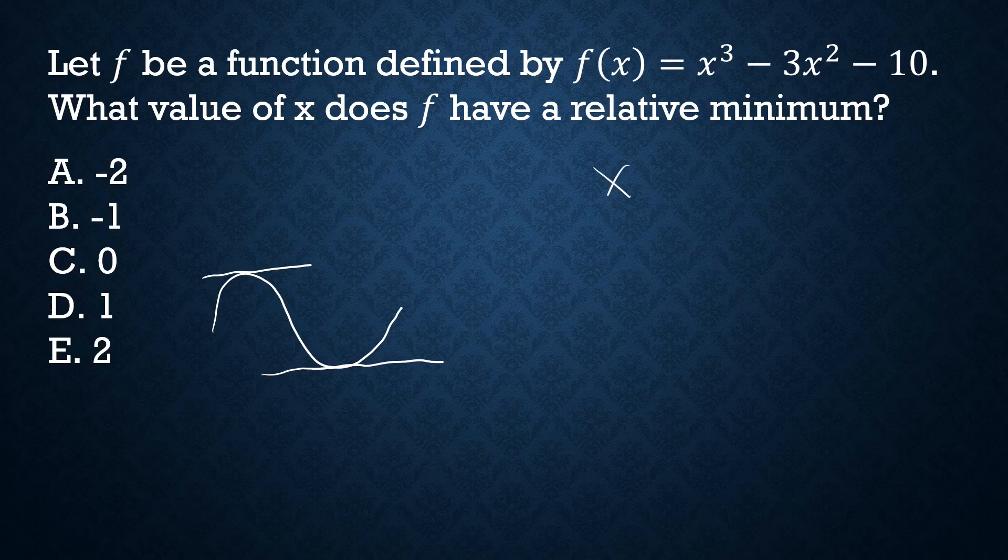So if we have x to the third minus 3x squared minus 10, take the derivative. 3 will come out front, reduce the exponent by 1, give us 2.